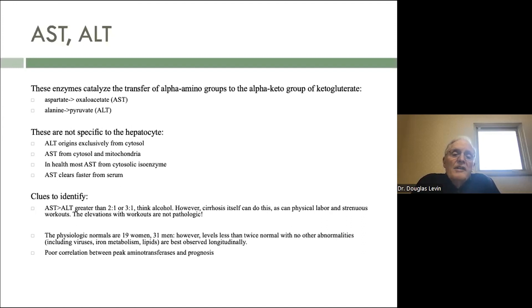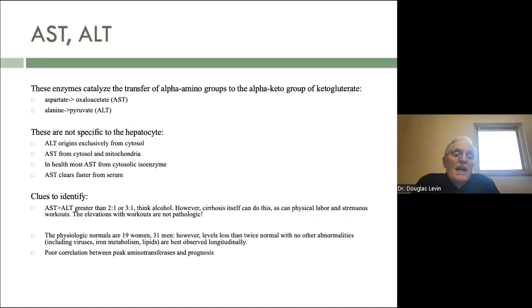These enzymes catalyze the transfer of alpha amino groups to the alpha-keto group of ketoglutarate — the AST from aspartate to oxaloacetate, and alanine to pyruvate for the ALT. Again, they're not specific to the hepatocyte. The ALT originates exclusively from the cytosol — that is, the sap in the cell. The AST is from both cytosol and mitochondria. In health, most of the AST is from the cytosol. The AST clears more rapidly from the serum.